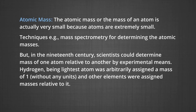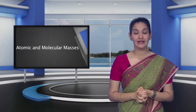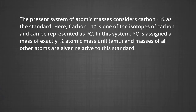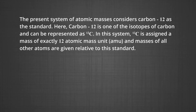In the 19th century, scientists could determine the mass of one atom relative to another by experimental means. Hydrogen, being the lightest atom, was arbitrarily assigned a mass of one without any units, and other elements were assigned masses relative to it. However, as agreed upon in 1961, the present system of atomic masses considers carbon-12 as the standard. Carbon-12 is assigned a mass of exactly 12 atomic mass units, called AMU, and masses of all other atoms are given relative to this standard.